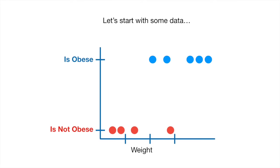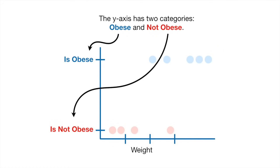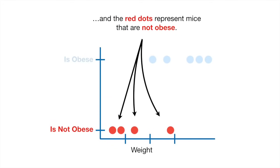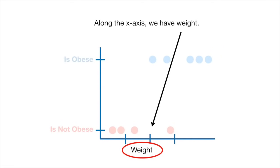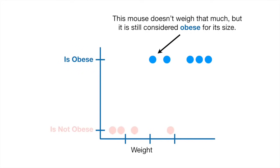Let's start with some data. The Y-axis has two categories: obese and not obese. The blue dots represent obese mice and the red dots represent mice that are not obese. Along the X-axis we have weight. This mouse is not obese even though it weighs a lot — it must be mighty mouse, just full of muscles. This mouse doesn't weigh that much, but it is still considered obese for its size.